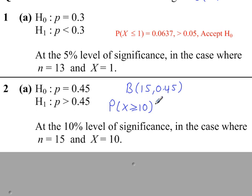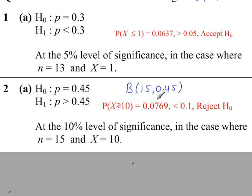So this is 1 minus P(x ≤ 9), which gives 0.0769. This probability is less than 10%, it's less than 0.1, so we reject H0.